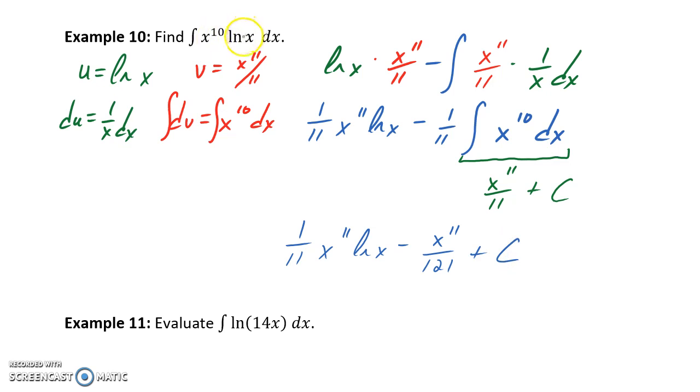So we started off with u equal to natural log of x, since that's always the better choice if a log function exists. Took the derivative of that statement. We let dv equal everything that was left over, so x to the 10th dx. We integrated that to get our substitution statement for v, set up the form for that integration by parts, and then integrated just the variable portion that was left here, and then pieced everything back together.